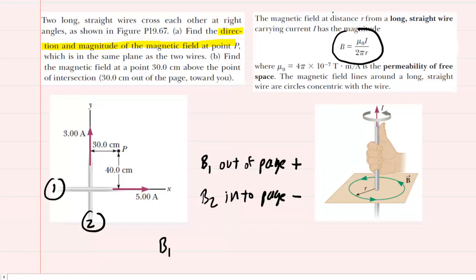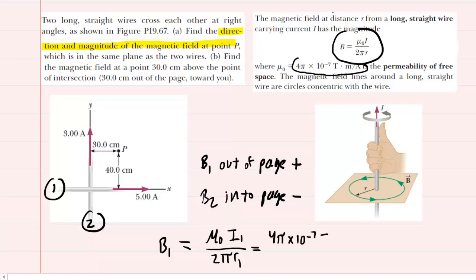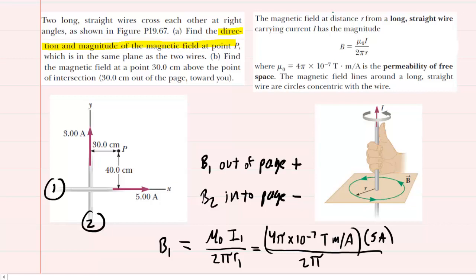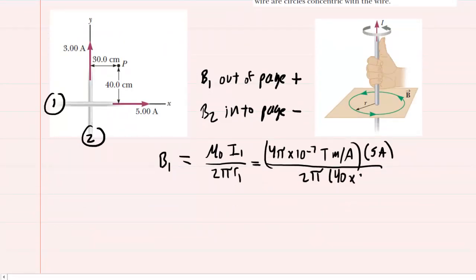Starting with wire number 1, which was the one running along the x-axis, we would have the constant mu times I1 divided by 2π times R1. The constant has a value of 4π times 10 to the minus 7 tesla·meters per amp. We multiply that by I1, the current running through wire 1, which is 5 amps. Then we divide by 2π times the distance from wire number 1 to the point, which is 40 centimeters — or 40 times 10 to the minus 2 meters. This gives us a magnetic field of 2.5 times 10 to the minus 6 tesla. Since B1 was positive, we leave this as a positive value.